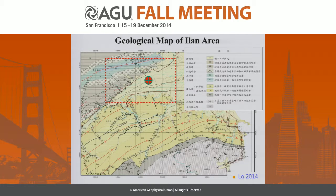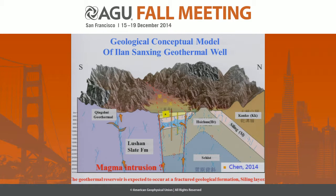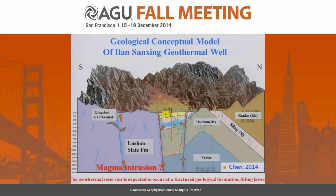This is geological data from the group which tells us the material composition of each formation. We also have a conceptual model proposed by the group. We have two main faults as mentioned before, and this is the exploration well. The hanging wall is the Shuishan Formation and the foot wall is the Lushan Slate Formation. There are a lot of fractures in the Qingshui sandstone layer, making it a good reservoir for geothermal energy.